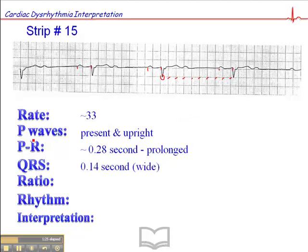The QRS is about 0.14 second or wide. So the question is why is it wide? Because we have a P wave preceding each QRS, so presumably there's some aberrant conduction going on here.